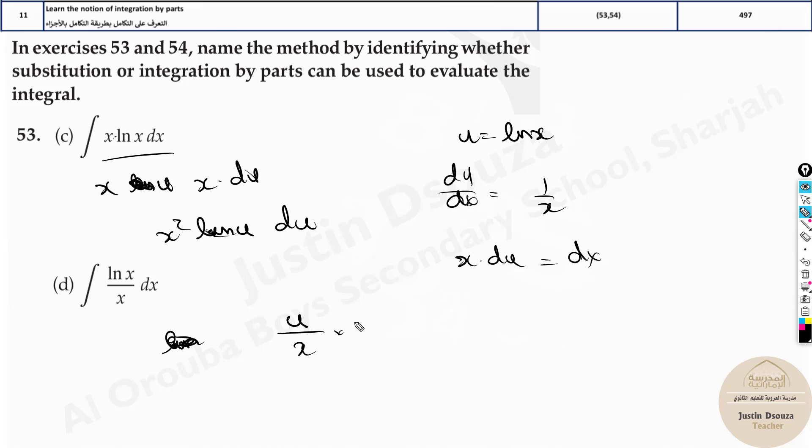What is dx? x times du. This and this cancels. Now you can solve it up. This becomes u squared by 2 plus c. You can solve it up.